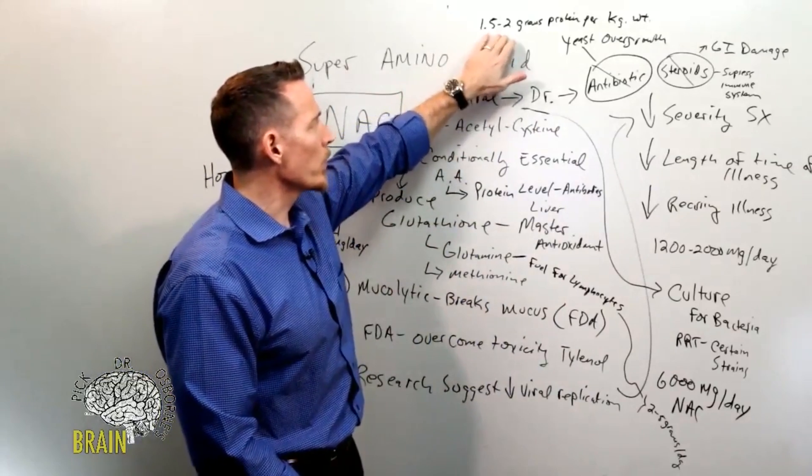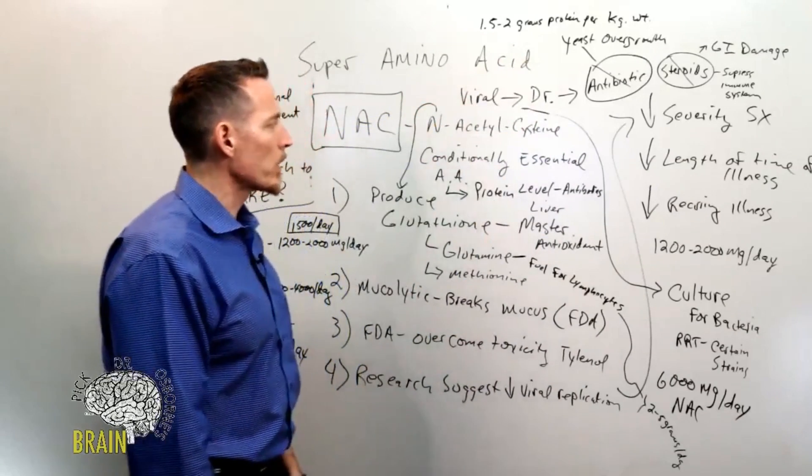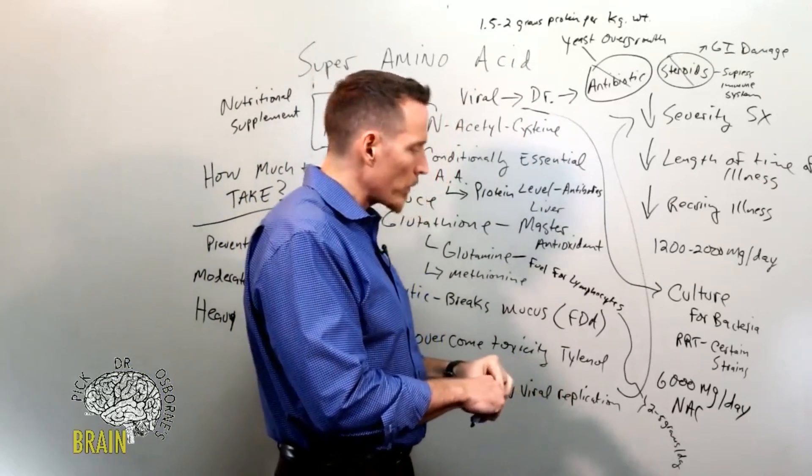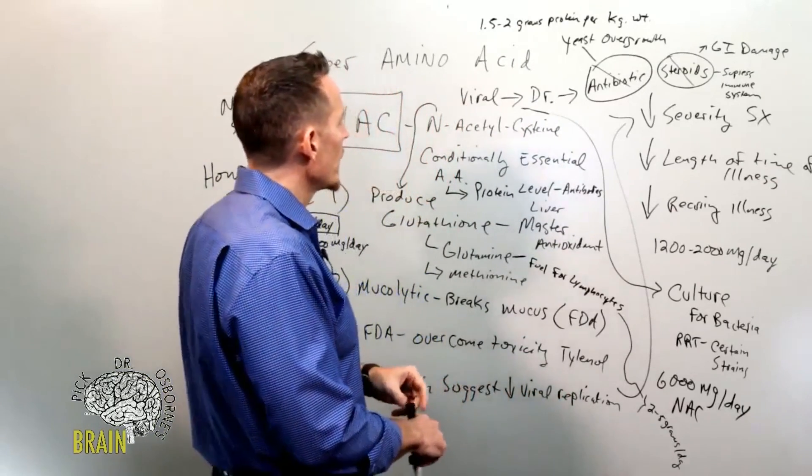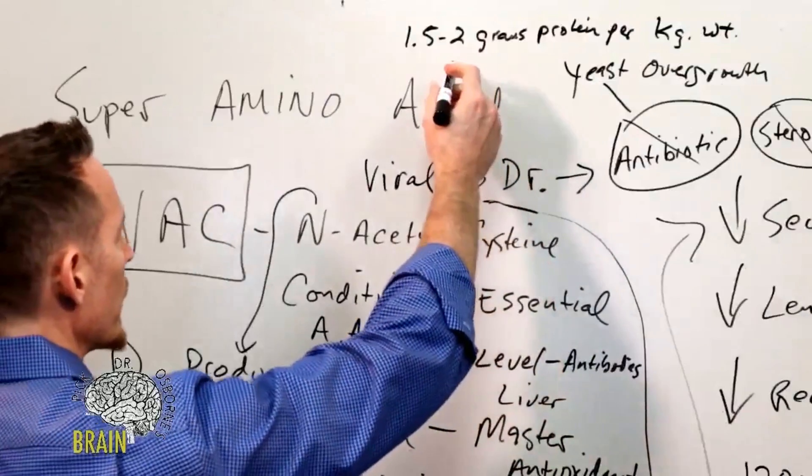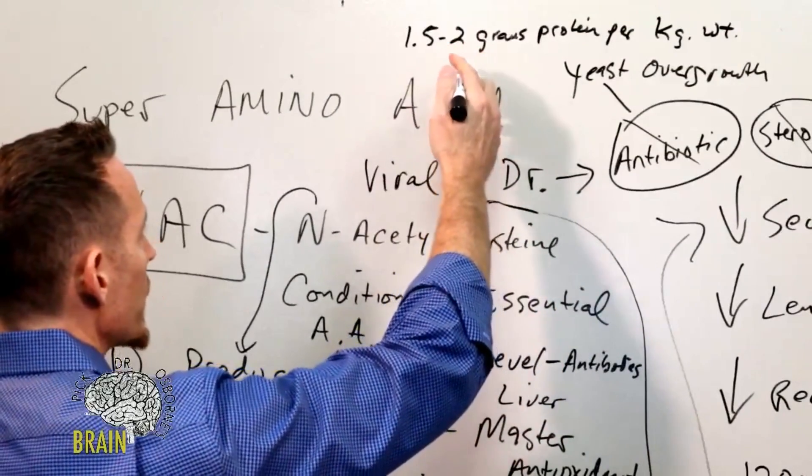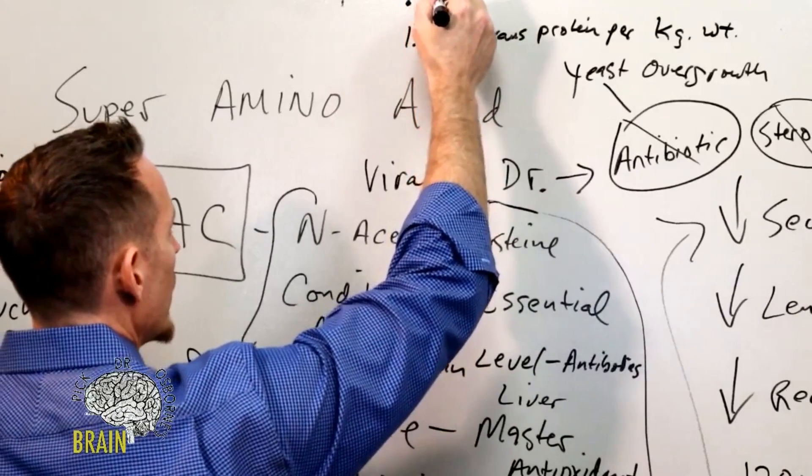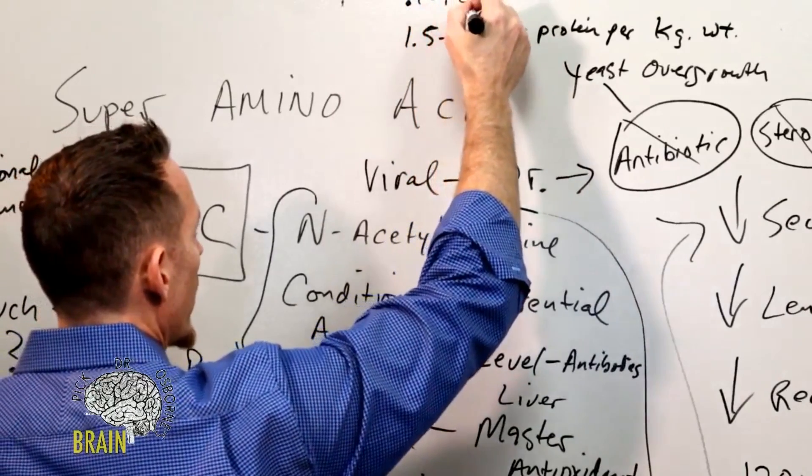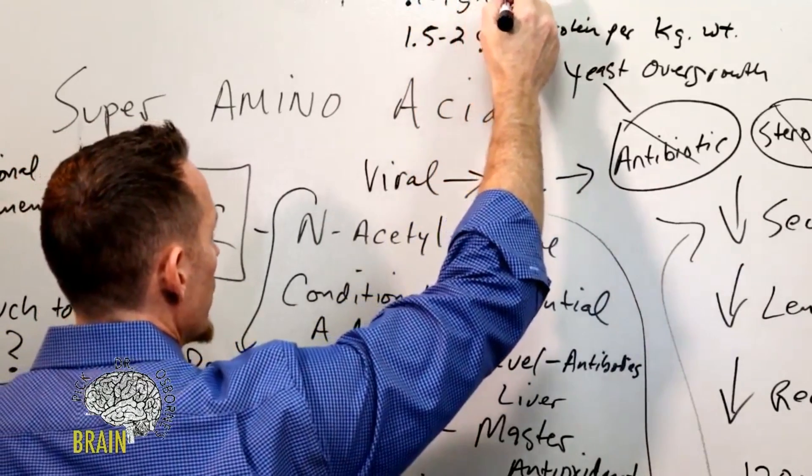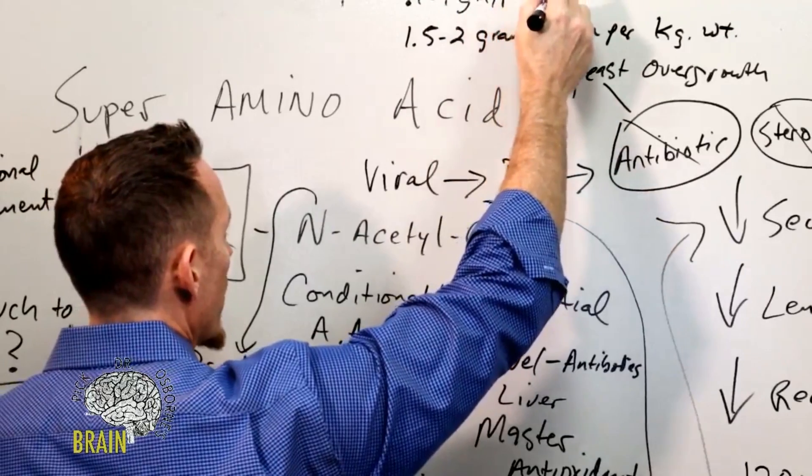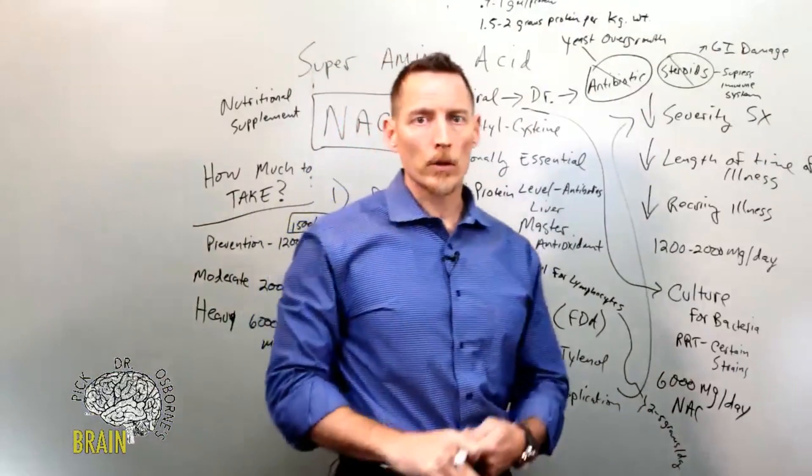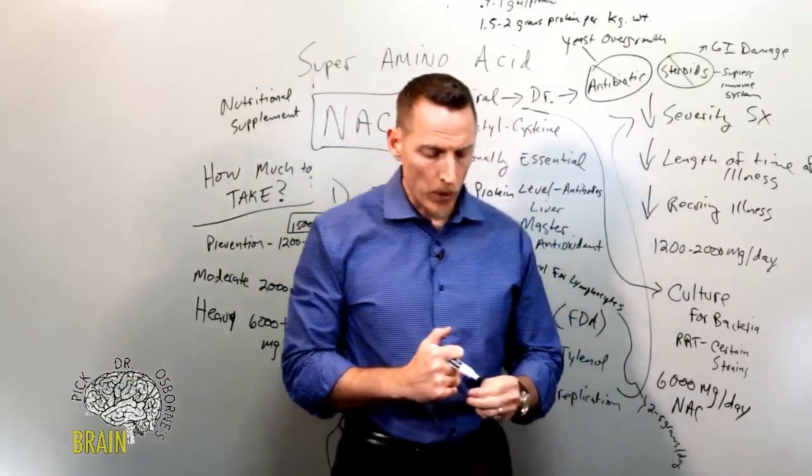Protein is very important during this time of year. You want to make sure you're getting an ample and adequate amount. A lot of people I've talked to these past few weeks, we've looked at their protein levels. What I'm seeing a lot of are people that are taking about half this, so they're somewhere around that 0.7 to 1 gram of protein per kilogram of body weight per day. That's not enough to keep your immune system strong for the cold and flu season or to protect you, especially with what we've got going on.